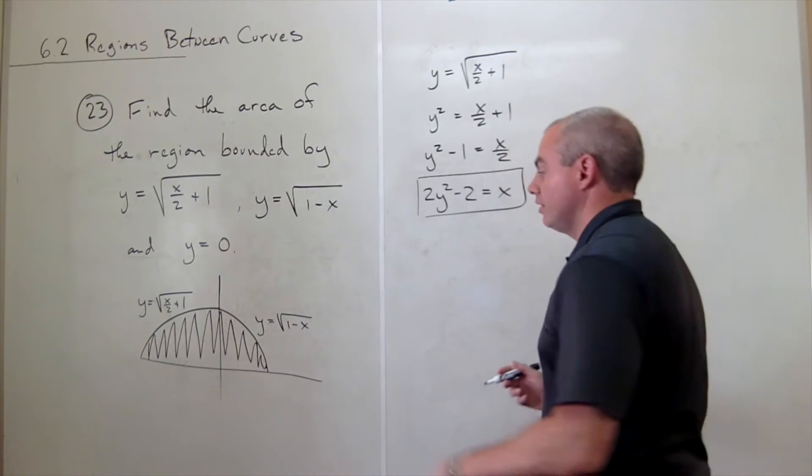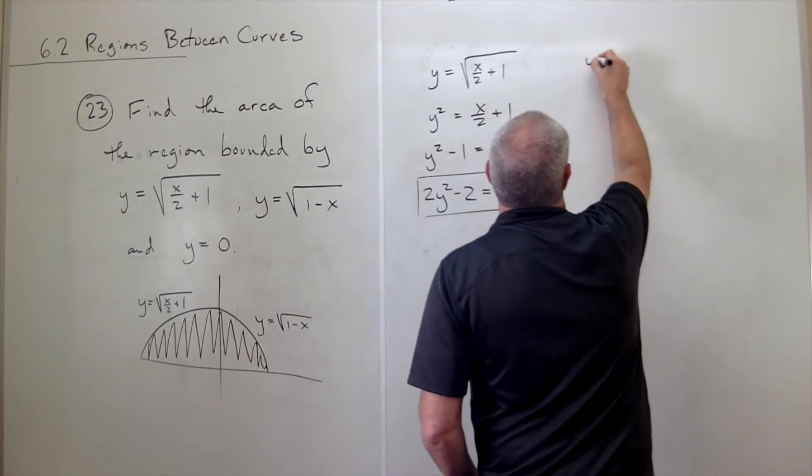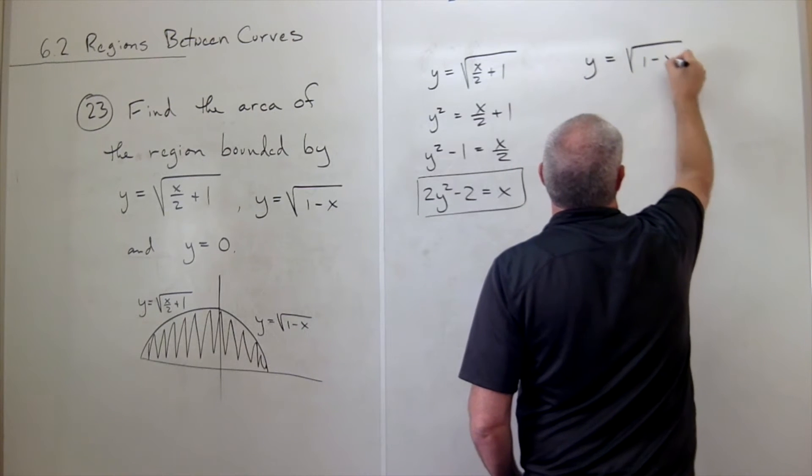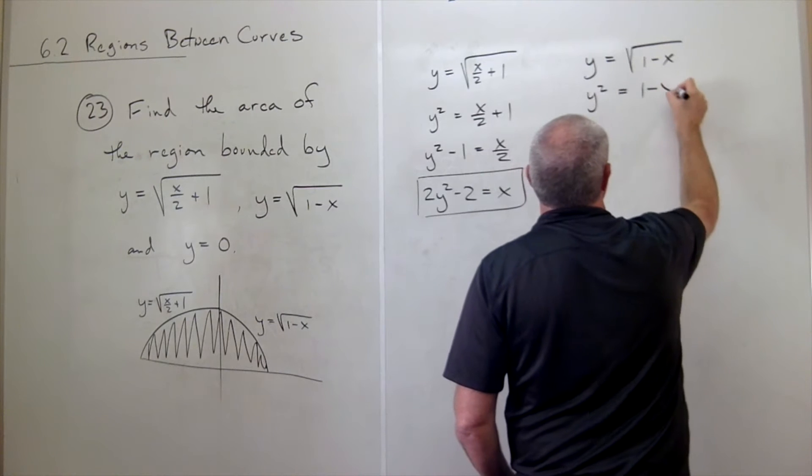Let's look at the other. That's y equals the square root of 1 minus x. So if I have y equals the square root of 1 minus x, that's the same as y squared equals 1 minus x.